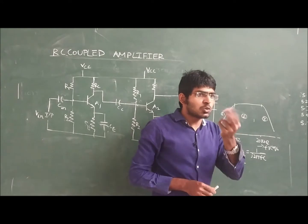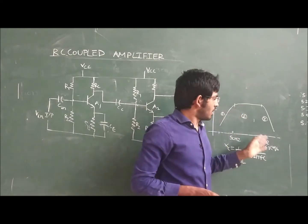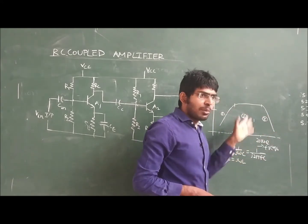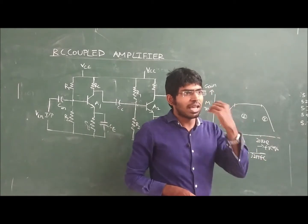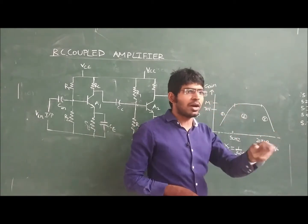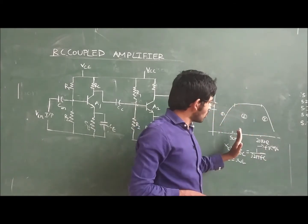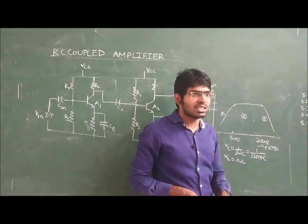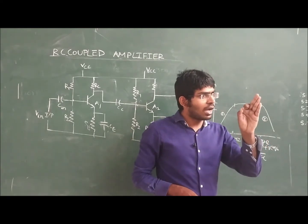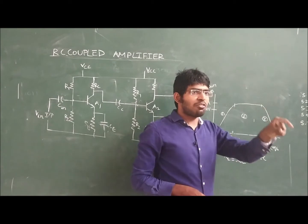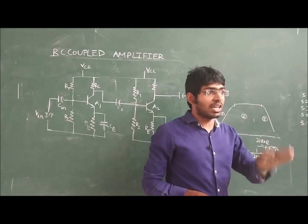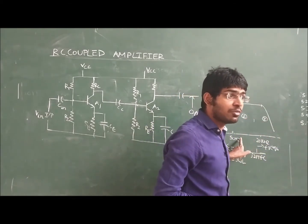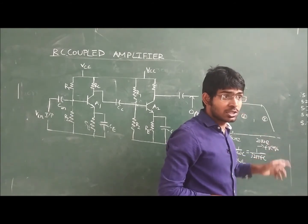The gain is constant. Even when a child speaks at 9 kHz — same gain. For the female voice at 6 kHz — same gain. For the male voice at 3 kHz — same gain. So in between 50 Hz and 20 kHz, for every frequency, the gain offered by the RC-coupled amplifier is the same. It is best suitable for frequencies in the range of 50 Hz to 20 kHz.